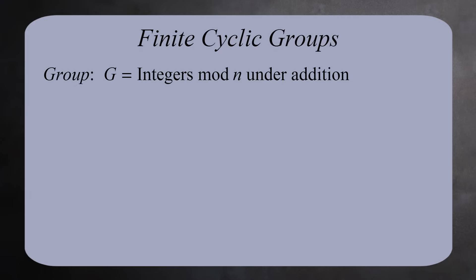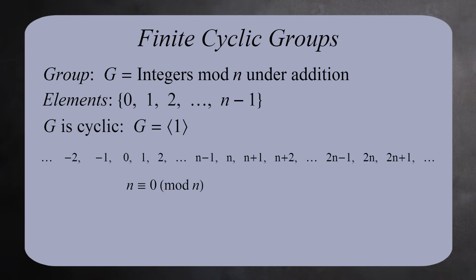The classic example is the integers mod n under addition. This is a finite group with n elements. It is also generated by the number 1. But something different happens here. Look at all the positive and negative multiples of 1. Recall that n is congruent to 0 mod n, n plus 1 is congruent to 1 mod n, and so on.